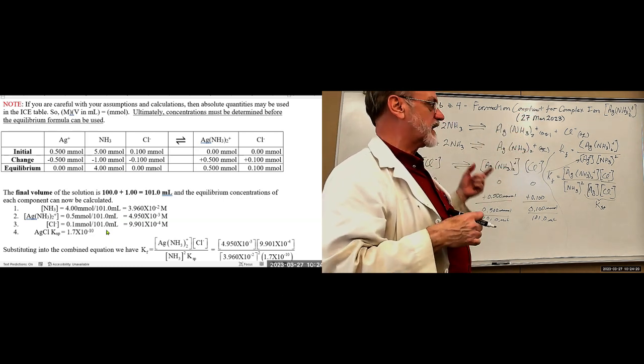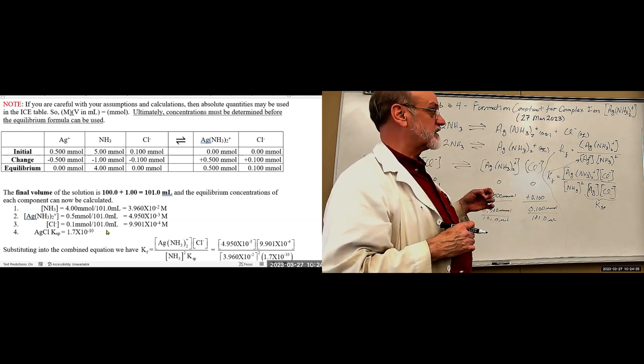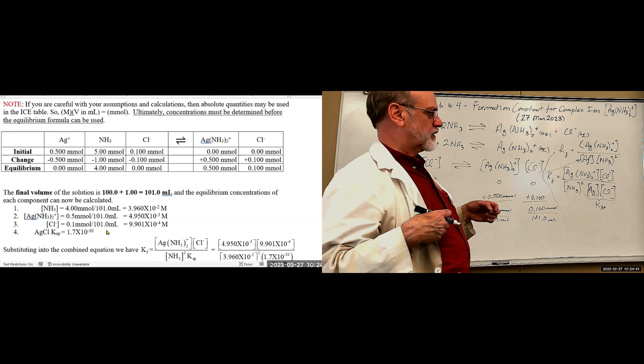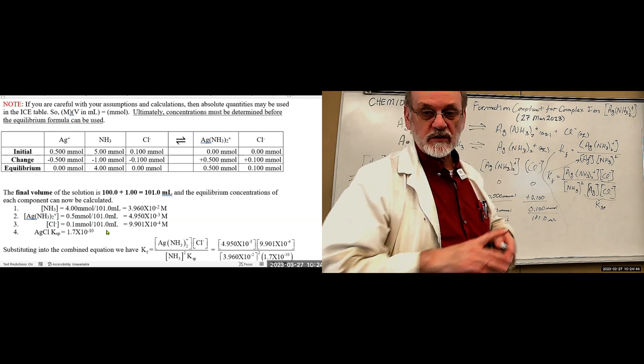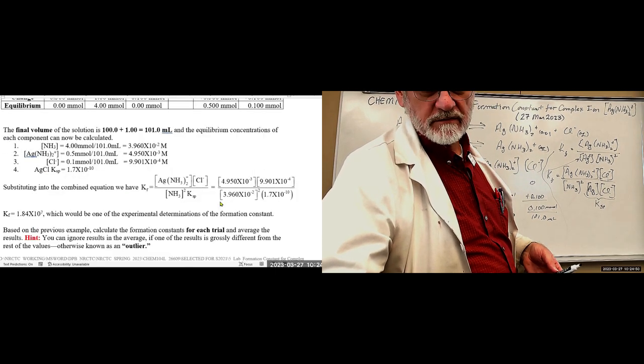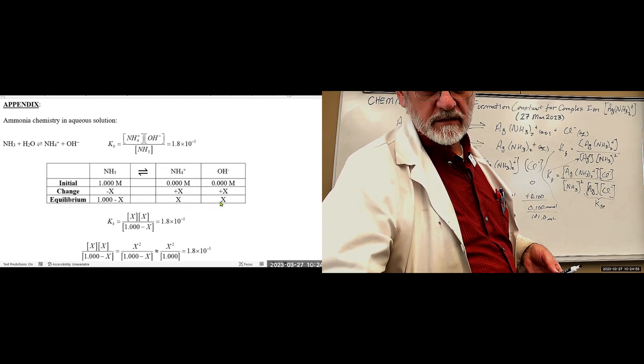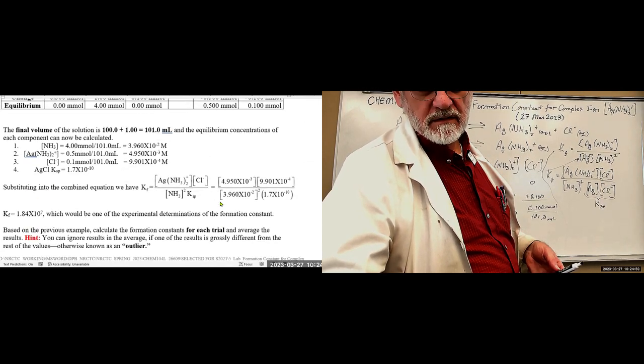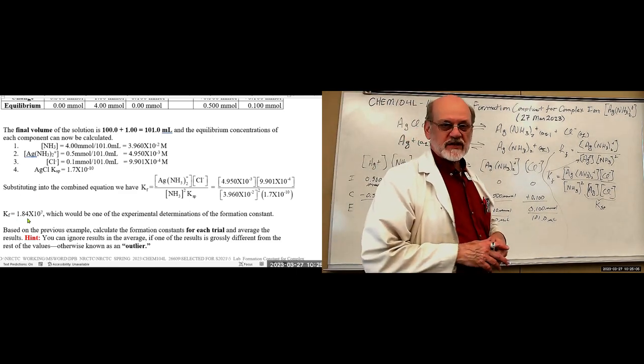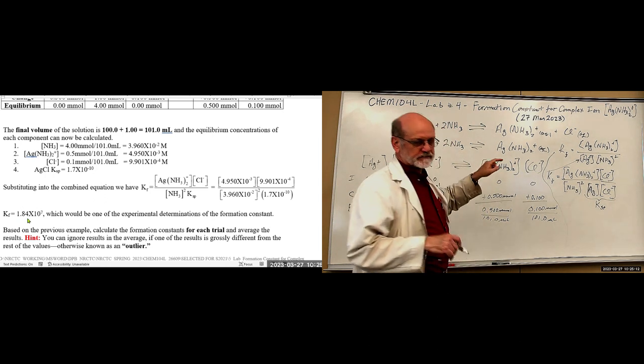Right, millimoles divided by milliliters is molarity. I have said that before, haven't I? Moles divided by liters is molarity, millimoles divided by milliliters is molarity, right, can we prove it? Millimoles divided by milliliters, what's milli? 10 to minus 3, 10 to minus 3, cancel cancel, moles divided by liters. So it works. So once you get those values and they're calculated below as you can see, ammonia is 3.96 times 10 to minus 2, complex ion is 4.95 times 10 to minus 3, and chloride is 9.9 times 10 to minus 4. And we're using 1.7 times 10 to minus 10 for the Ksp for silver chloride. Plug it into your equation and you get a number. There it is down below, 1.84 times 10 to the 7 is the formation constant for this.